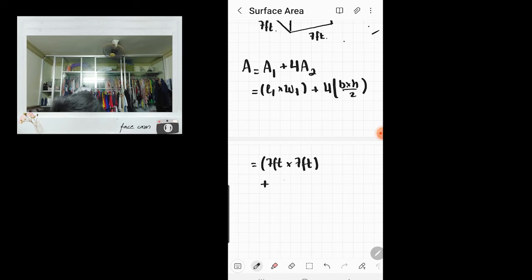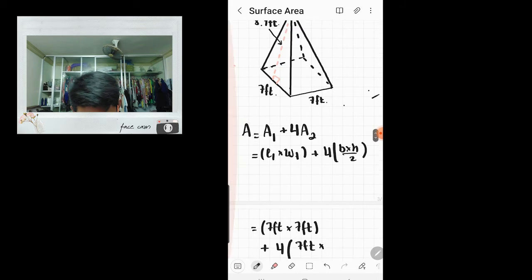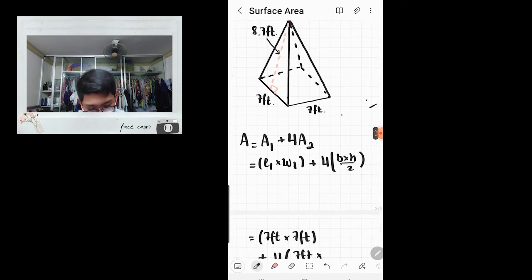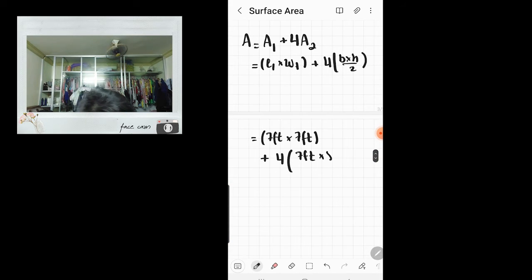Plus 4 times, so our triangle base is 7 feet, and our height is 8.7 feet, and divide by 2.